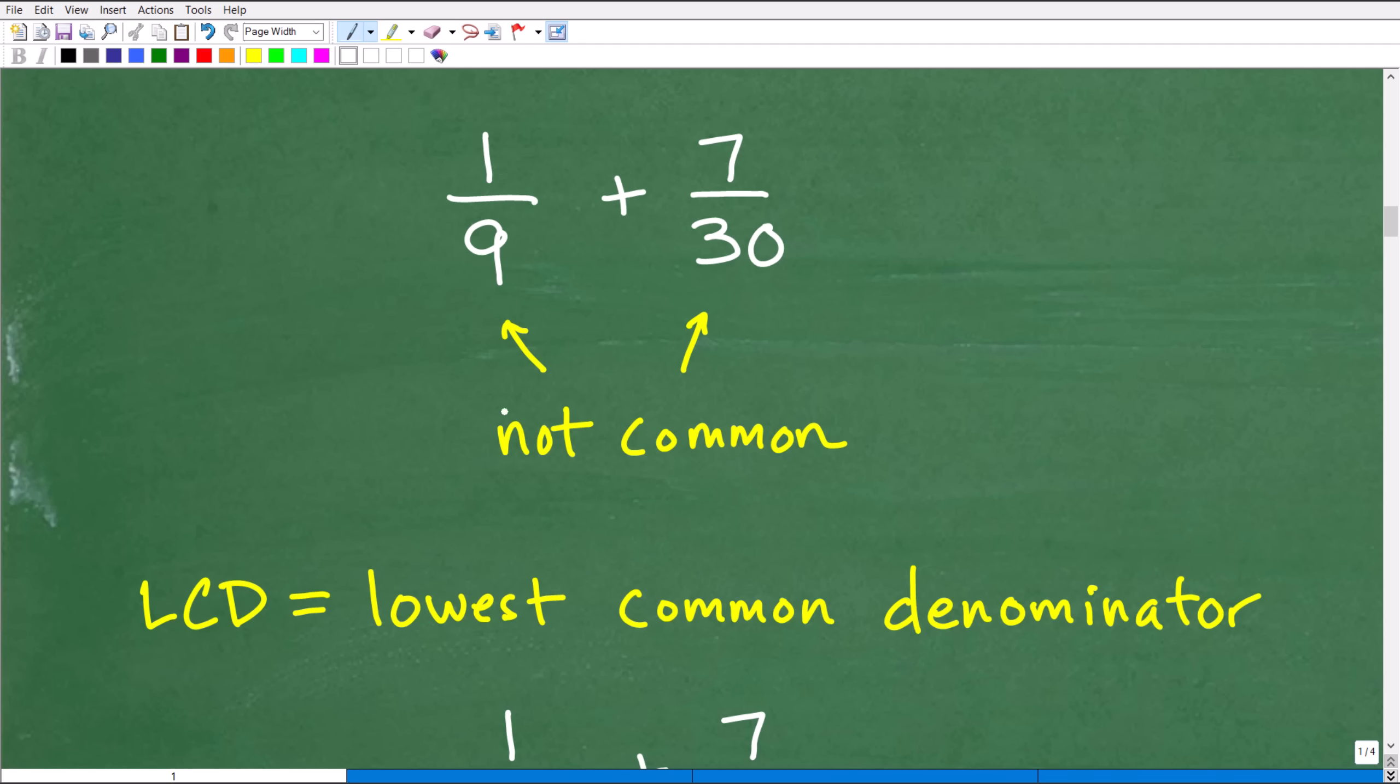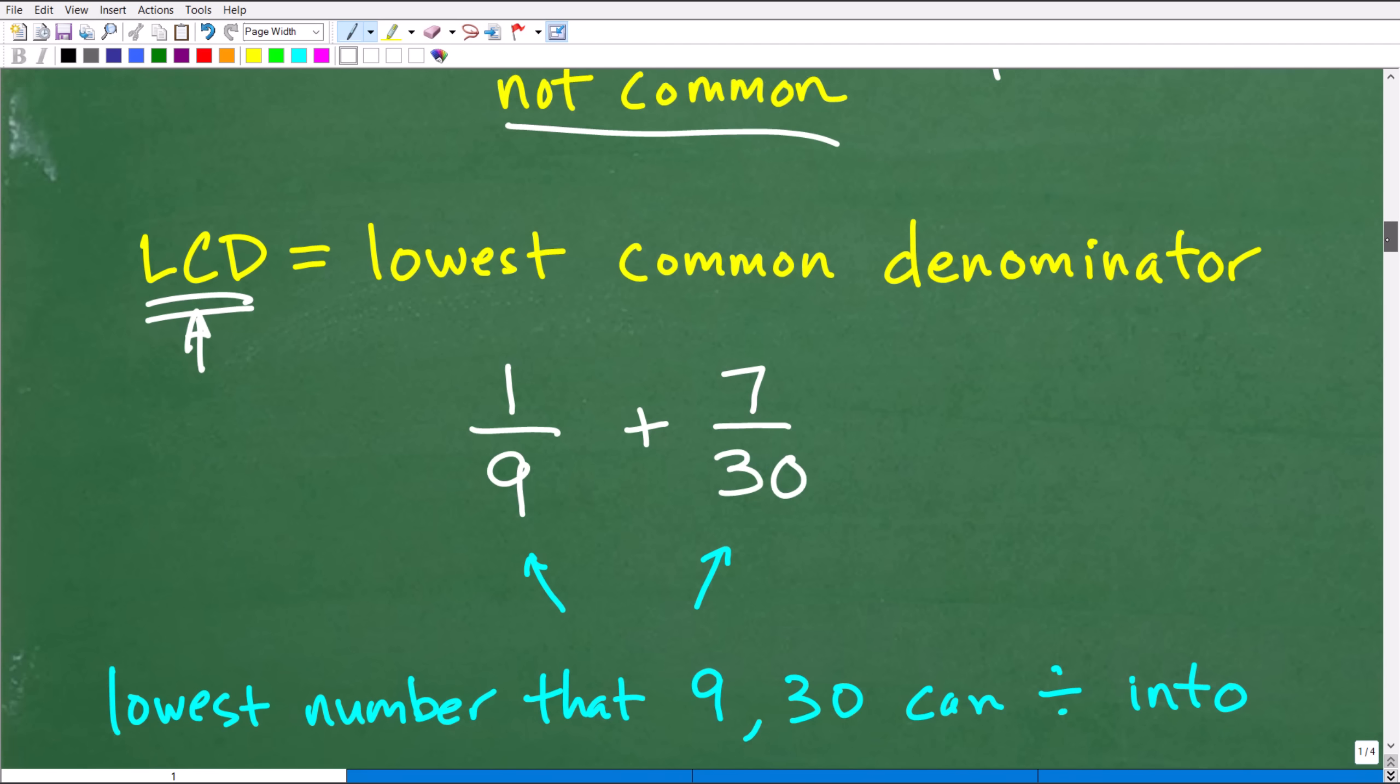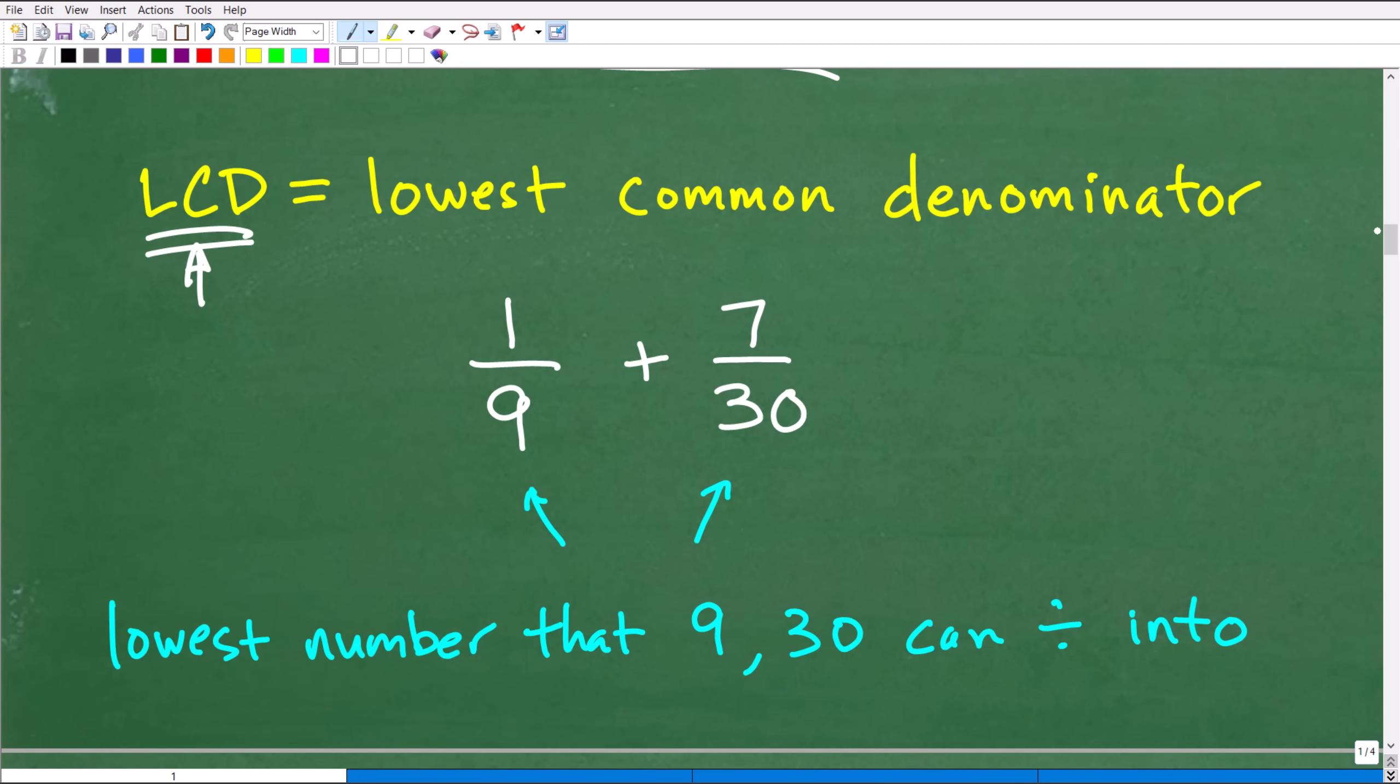We have 1/9 plus 7/30. Obviously, these two denominators are not common. What we're going to do is find the lowest common denominator. Any two numbers, there's always going to be numbers they have in common. In fact, 9 and 30 have infinitely many denominators that they have in common. But we don't want all the denominators. What we want is the lowest common denominator.